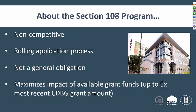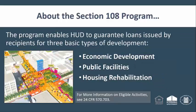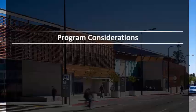One of the best features of this program is that you can get five times the amount of your current block grant in low-cost financing. So if you're getting a million dollars a year in CDBG funding, you'll be able to get five million dollars in Section 108 Guaranteed Loan funding. There are generally three broad types of project developments you can use this financing for: economic development projects that create jobs and increase tax wealth, public facilities available to community members, and the rehabilitation of housing.